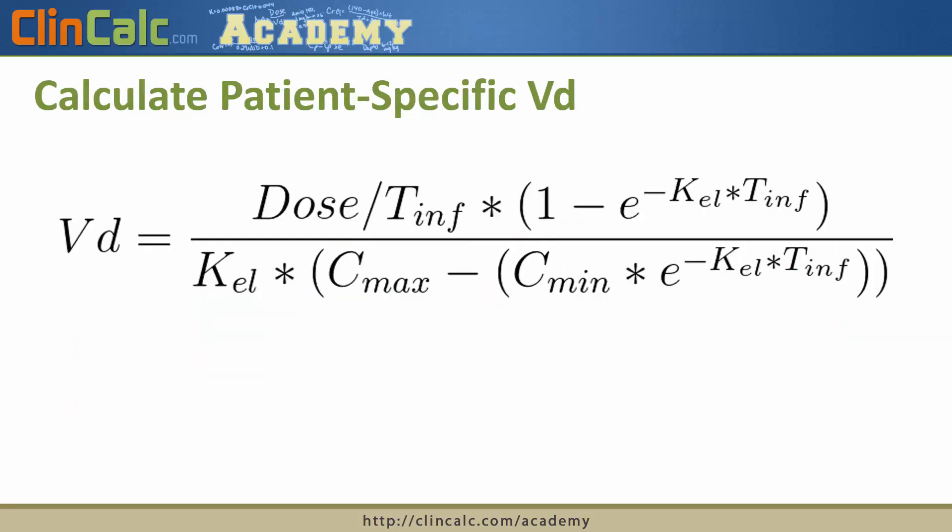Now, the reason that we did that back-extrapolation is that the next equation does require a Cmax or a peak and a Cmin or a trough for a patient. And if you didn't have those values based on when the timing of your draw was, you may have to mathematically calculate those.